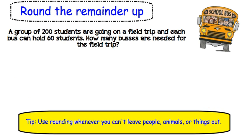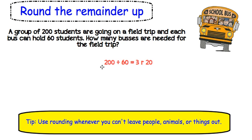The last option is to round the remainder up. Here is an example. A group of 200 students are going on a field trip and each bus can hold 60 students. How many buses are needed for the field trip? First we are going to do 200 divided by 60 because we have 200 students and 60 can fit on each bus. This gives us an answer of 3 remainder 20, meaning that we have 3 groups of 60 students but we still have 20 students left.